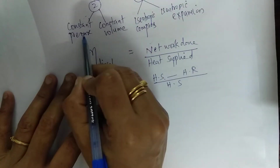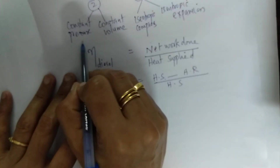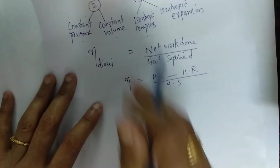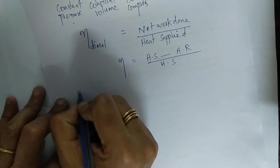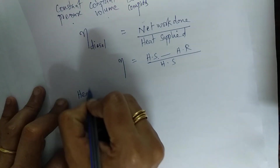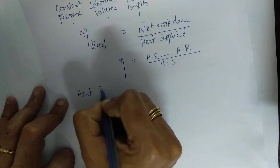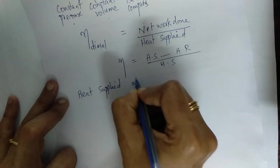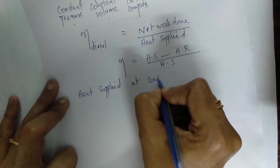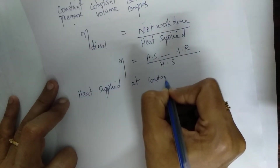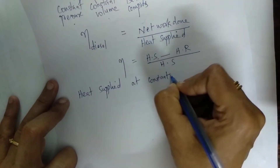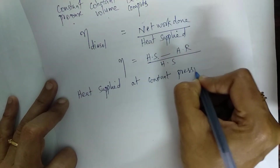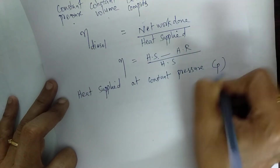The processes take place at constant pressure and constant volume. Heat energy is supplied at constant pressure, using the specific heat at constant pressure, Cp.